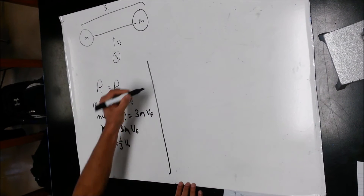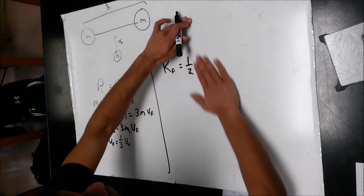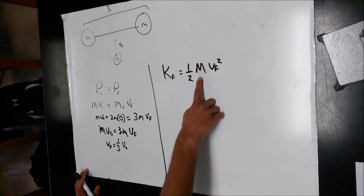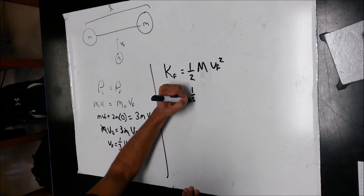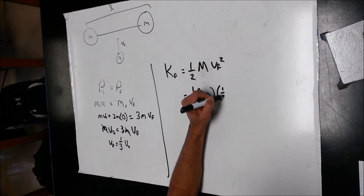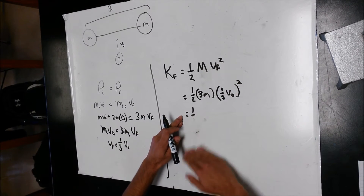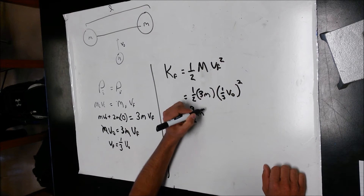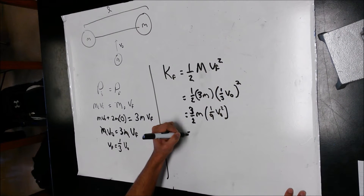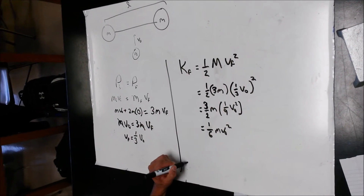Now, kinetic energy final equals one-half times the mass of your system times velocity final squared. The final mass of our system is 3M, and the final velocity is one-third V0. Simplifying, you get three-halves M times one-ninth V0 squared. This becomes one-sixth M V0 squared.